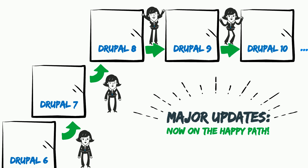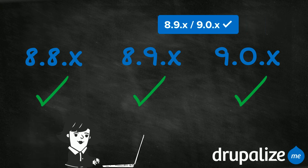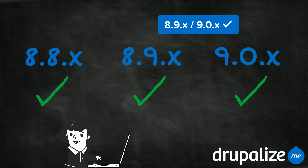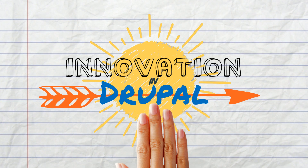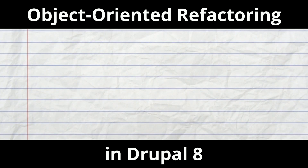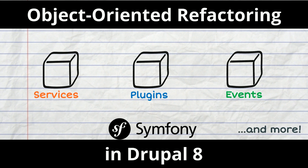It also means DrupalizeMe's Drupal 8 tutorials apply to Drupal 9 sites. And our commitment to keeping our tutorials up to date with the latest version of Drupal, whether major or minor, continues. Innovation in Drupal has fundamentally changed because of the major object-oriented refactoring done in Drupal 8. Drupal's object-oriented architecture makes adding new APIs and features possible without the need to wait for a new major version update.